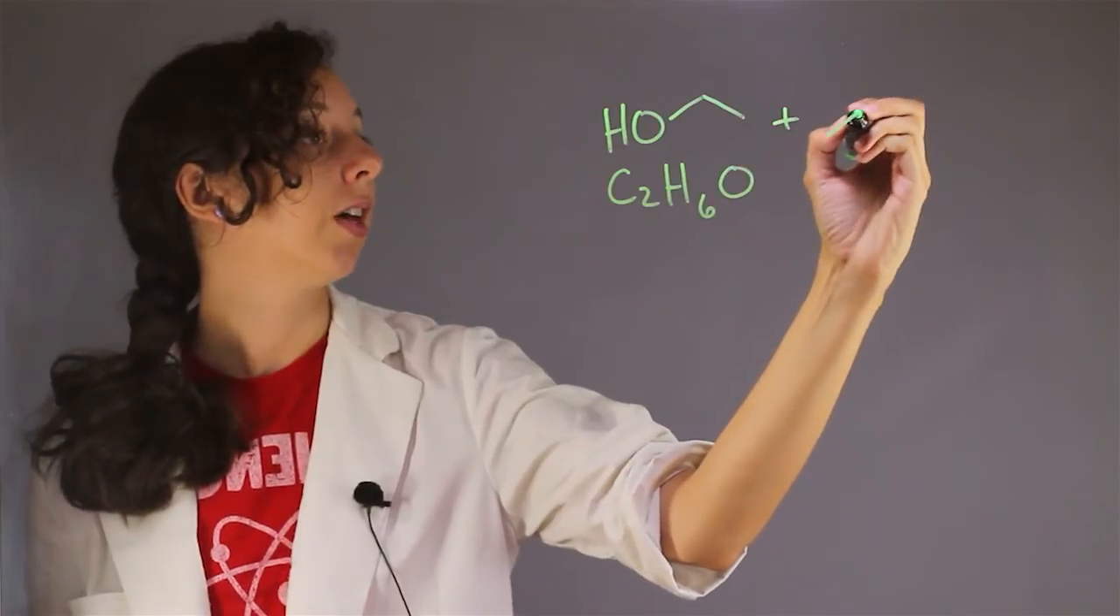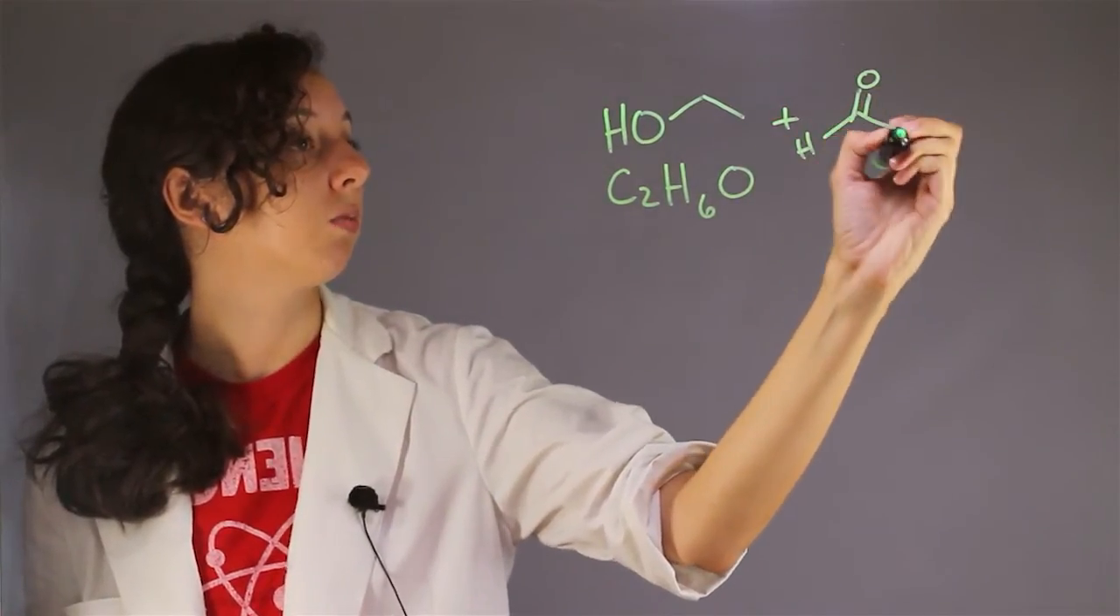Now let's look at formic acid. So formic acid is the smallest of the carboxylic acids, just has a little aldehyde guy here, and its chemical equation is CH2O2.